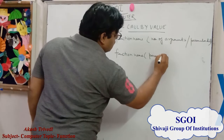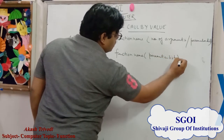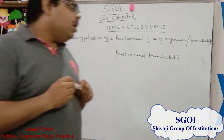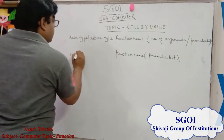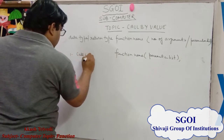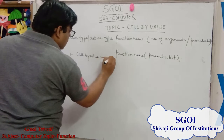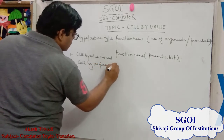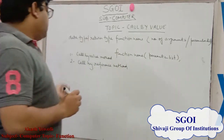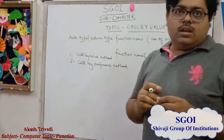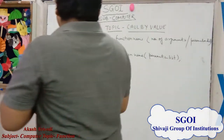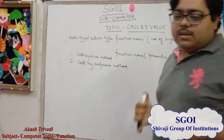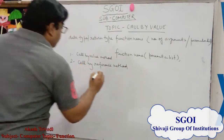The parameter list is optional. In C and C++ language, any user can call a function with two methods. The first is the call by value method and the second is the call by reference method. In call by value, the value is copied from the actual parameter into the formal parameter. In call by reference, the address is copied from the actual parameter to the formal parameter. Firstly, we understand what is the call by value method.